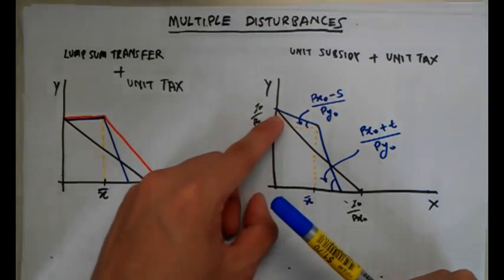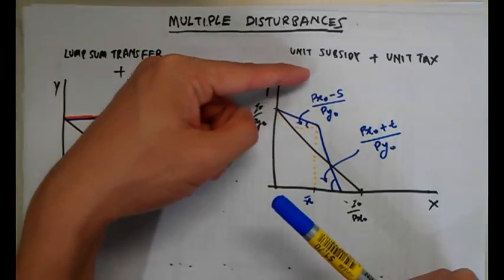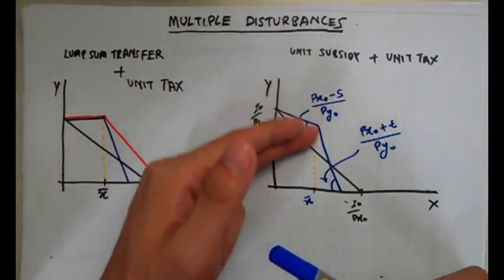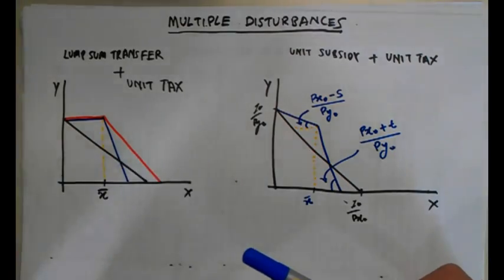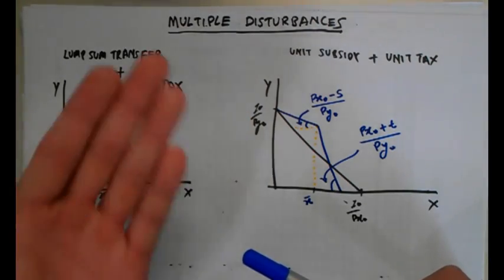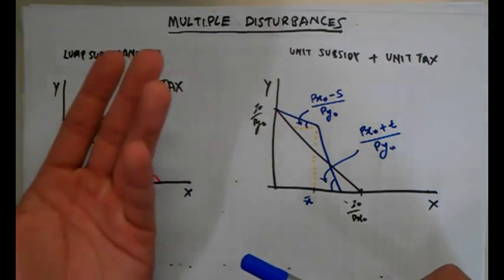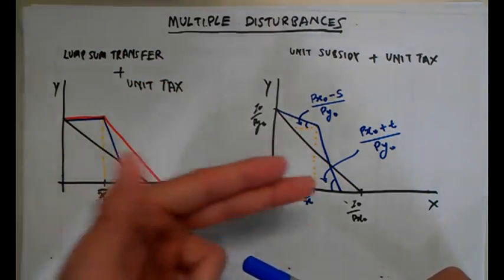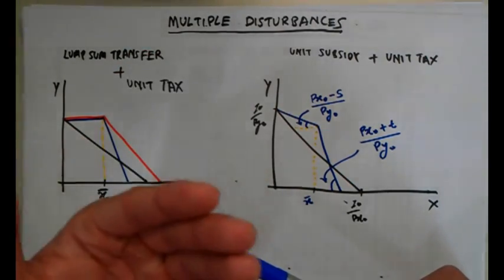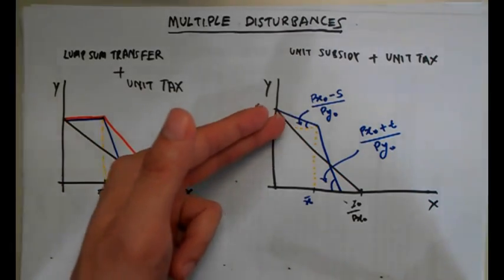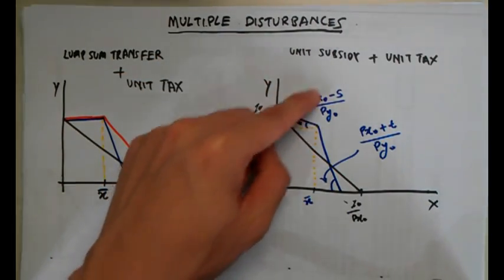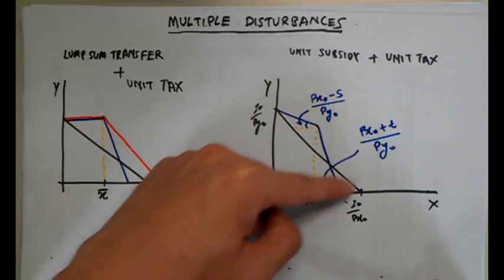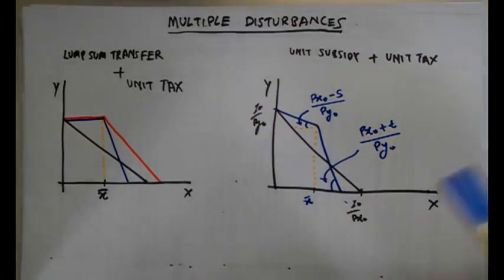On the right-side example, we see a per unit subsidy followed by a per unit tax. The budget constraint rotates outwards due to the subsidy up to a certain quantity X-bar. Beyond X-bar, a per unit tax applies. An example scenario is the government subsidizing consumption below X-bar to encourage lower consumption, but taxing consumption above X-bar. So the budget constraint rotates inwards beyond X-bar. Take note of the gradient notations for each portion.